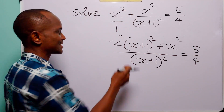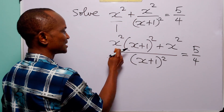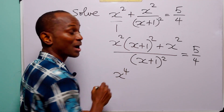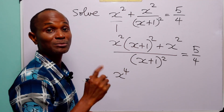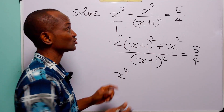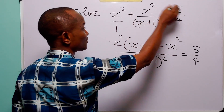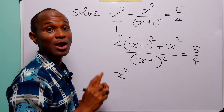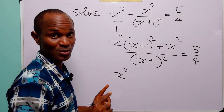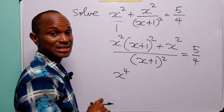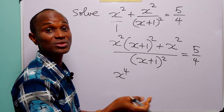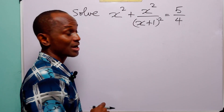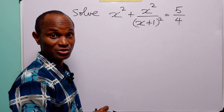By the time we expand this bracket we are going to have a term in x to the power 4. But the aim for this tutorial is to solve this equation without having to solve a polynomial bigger than a quadratic equation. So instead of doing this, we are going to take a different approach — a substitution.